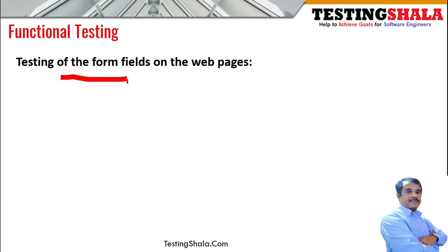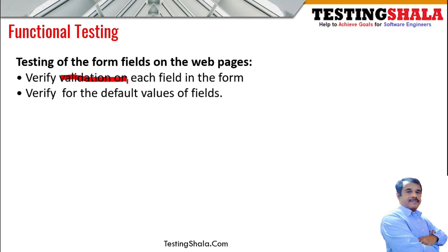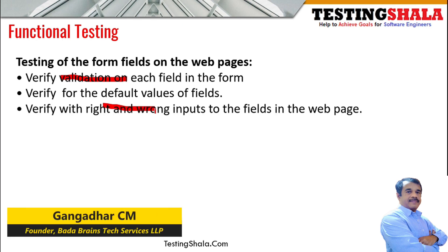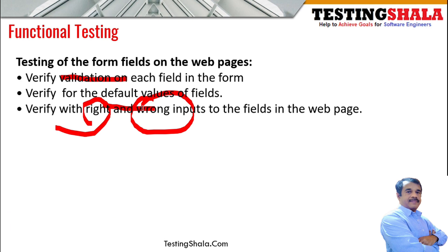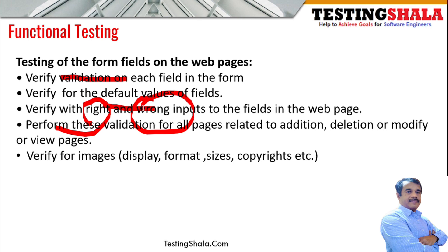The next type of functional testing is form field validation — for example, on a registration page which may have many fields like text boxes and date fields. We must ensure each UI element is validated, including default values. We should verify both correct and incorrect inputs to see whether the right error messages appear or if exceptions are thrown.